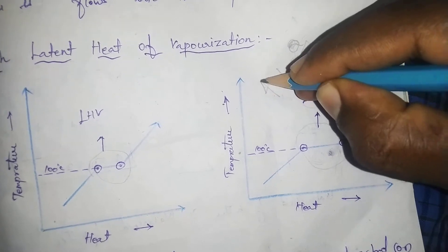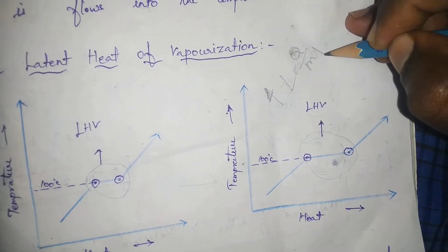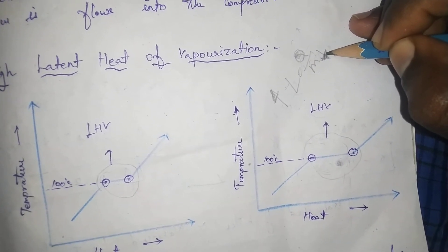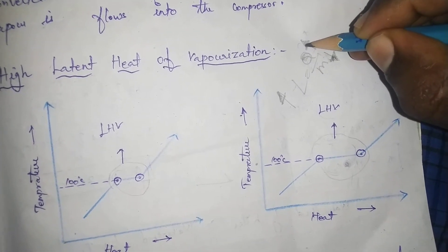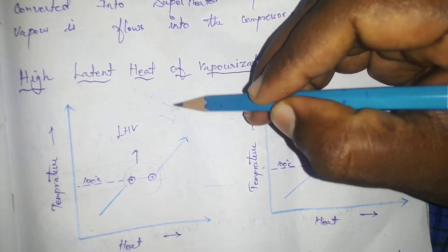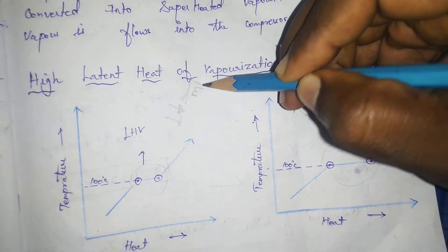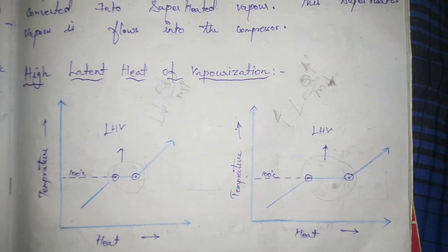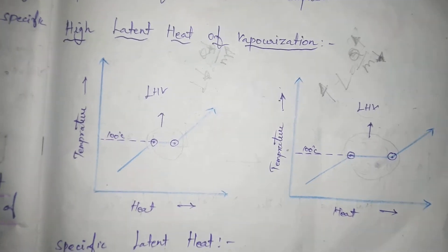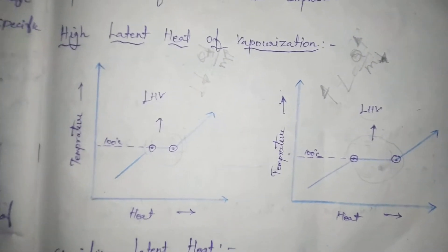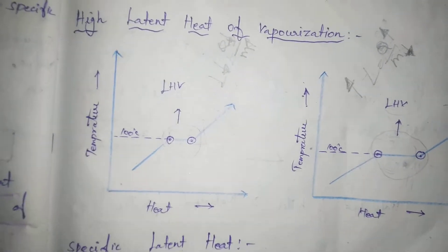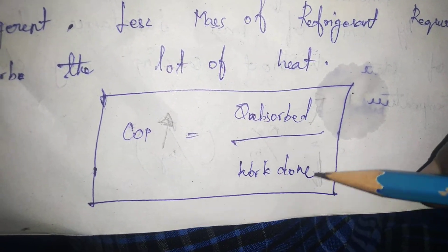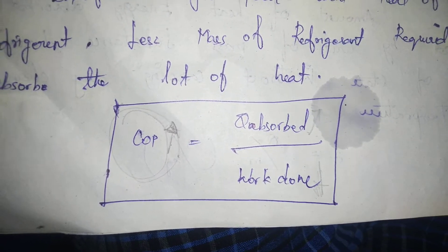Since L equals Q divided by M, using different latent heats of vaporization with the same mass means that a higher latent heat of vaporization leads to greater heat absorption from the surroundings. So when we use high latent heat of vaporization with the same mass, we absorb more outside heat.